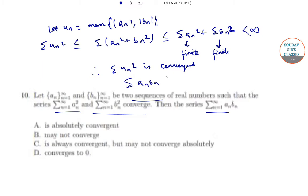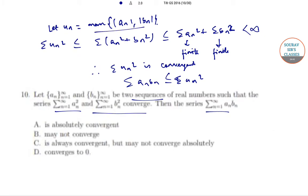Summation a_n b_n is less than or equal to summation u_n squared, since u_n equals maximum of mod a_n and mod b_n, which is less than infinity. Therefore summation a_n b_n is absolutely convergent. So option A is the correct answer. I'll see you soon.